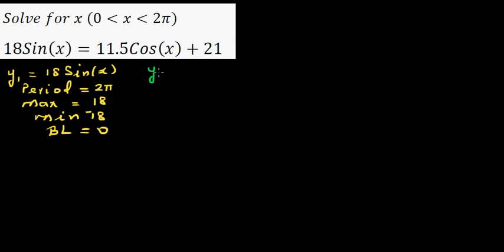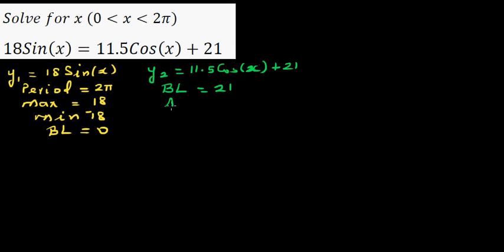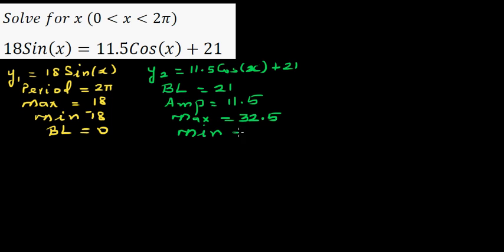For the second equation, y2 is 11.5 cos x plus 21. Your baseline is 21 and your amplitude is 11.5. So your maximum is 21 plus 11.5, which is 32.5, and your minimum is 21 minus 11.5, which is 9.5. The period is 2 pi as well.